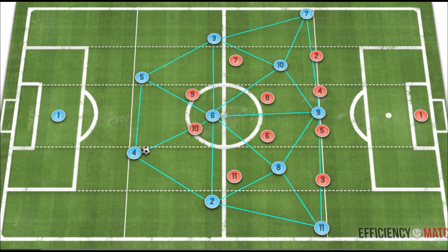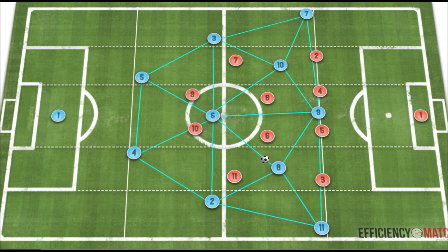The triangles themselves aren't so much important — it's the connections that they represent. If we look at the holding midfielder, the number six, he has strong connections between teammates into more advanced players. This is a good reference point to see the availability the six has to his offensive teammates in more advanced areas, and the superiority that can be generated, which is represented by these connections and oftentimes leads to triangles.